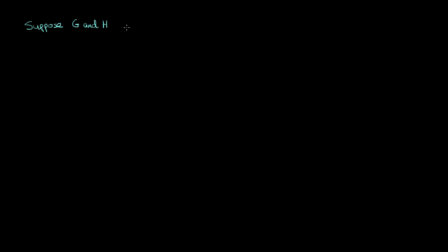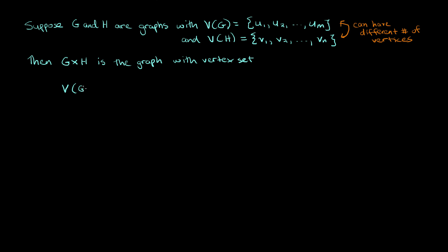Suppose that G and H are graphs, where the vertex set of G is the set {u1, u2, ..., um}, and the vertex set of H is {v1, v2, ..., vn}. So notice that these two graphs can have different numbers of vertices. Then the Cartesian product of G with H is the graph which has vertex set given by the Cartesian product of the two vertex sets. And we know what that is. That's equal to the set of all (ui, vj), where ui is a vertex of the graph G and vj is a vertex of the graph H.